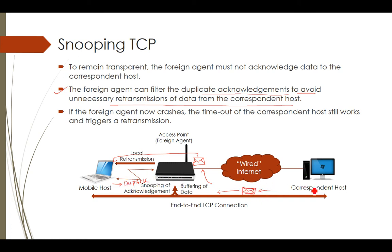If the duplicate acknowledgement were allowed to reach the correspondent host, the same message would need to be sent from there and would take a long time. That is why local retransmission is a better option, and the foreign agent avoids unnecessary retransmission of data from the correspondent host.